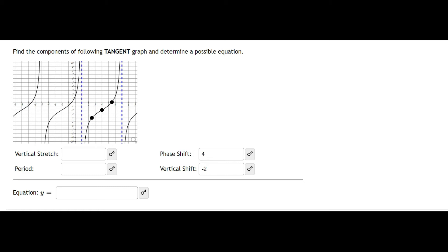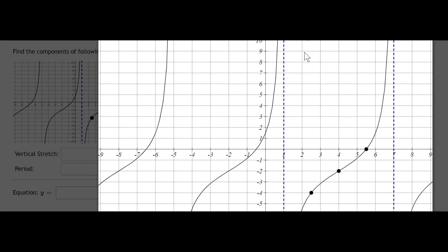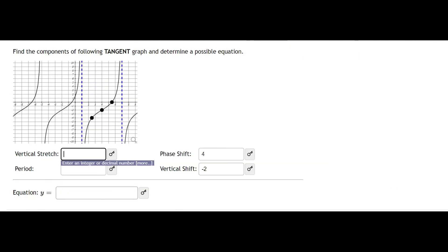Now the vertical stretch is the distance, the y value distance from the inflection point to either the upper dot or the lower dot. So let's come back here and look at this image. So this is at negative 2, that's the y value, and then we went up to the x-axis. So 0. So this has a vertical stretch of 2.